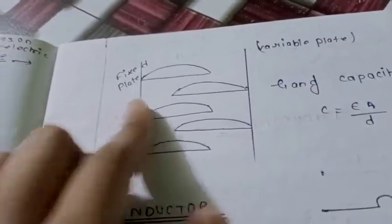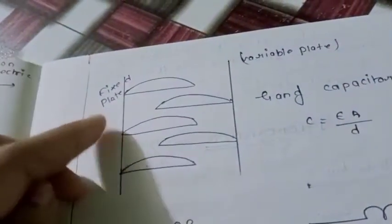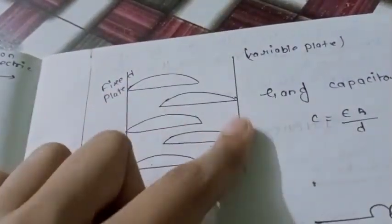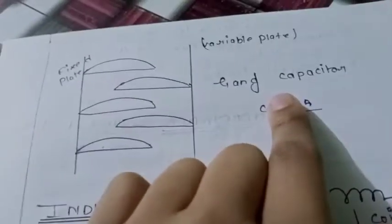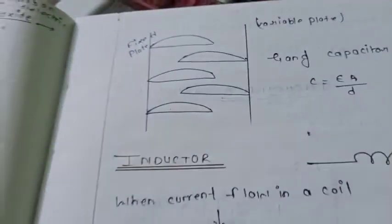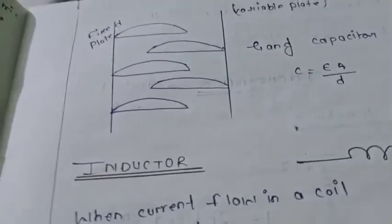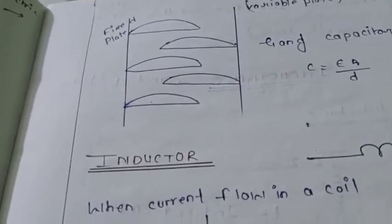This is the fixed plate and this is the variable plate. This is known as gang capacitor. So thanks for watching guys, and we'll see you in the next video.